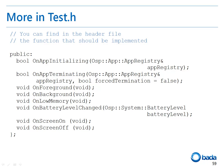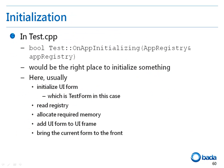First, let's look at the source code of the part that initializes an application. The function that initializes the application is the onAppInitializing function in the test.cpp file. The onAppInitializing function generally initializes the UI, reads the registry, allocates the memory required for the application, and attaches the UI form to the UI frame.